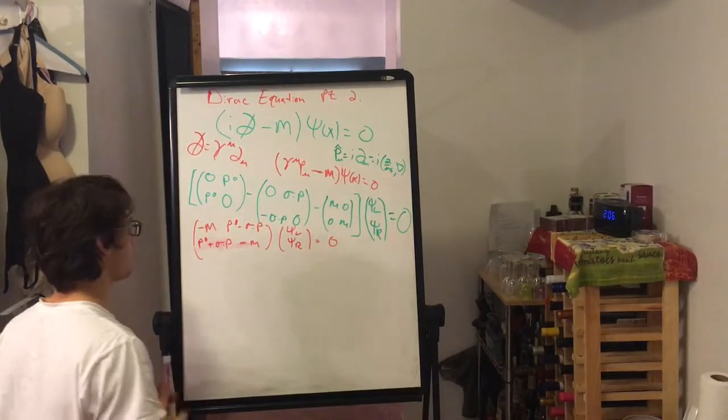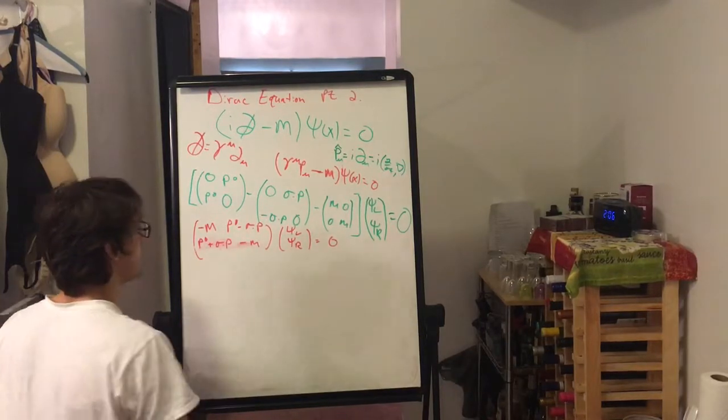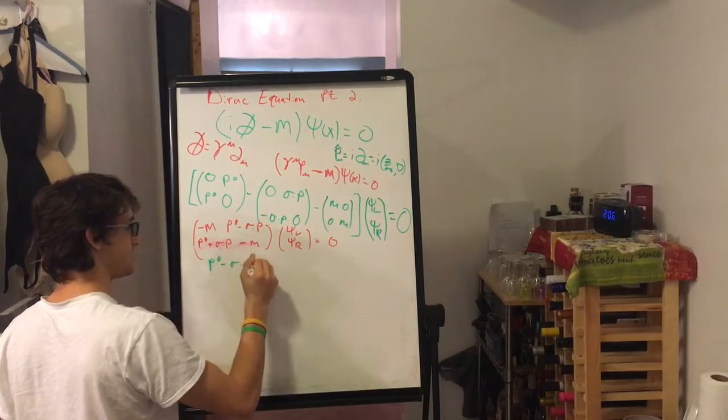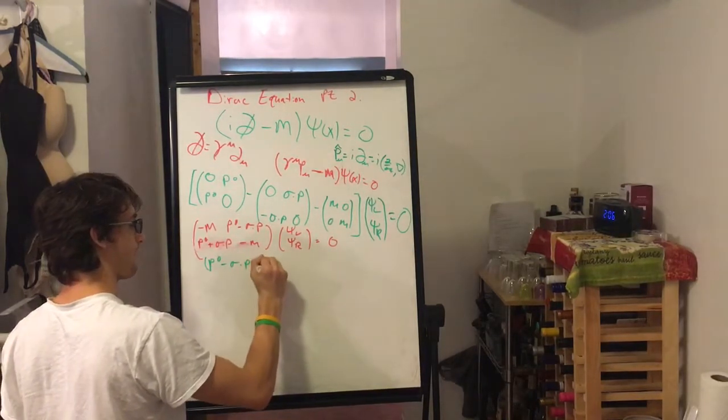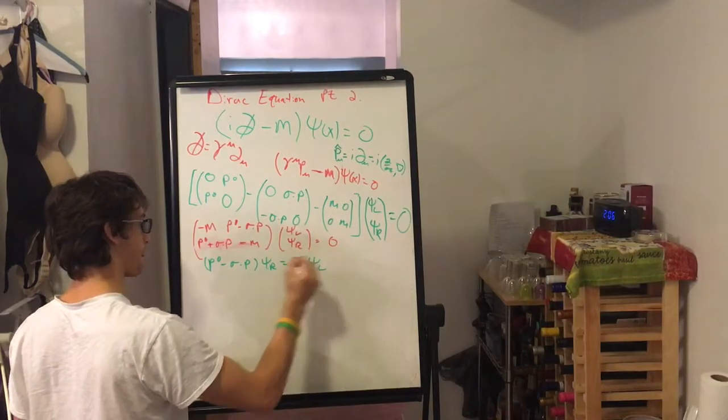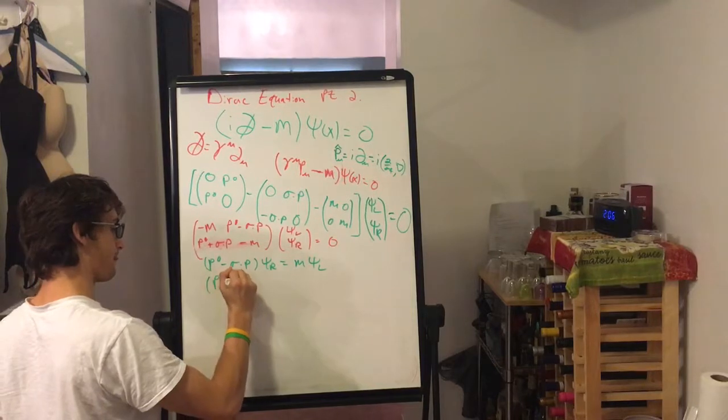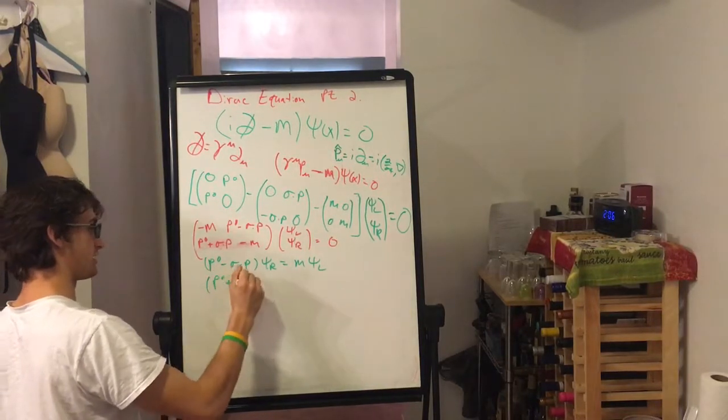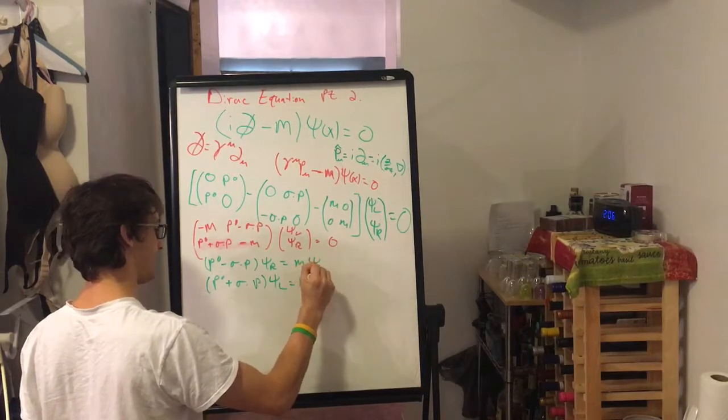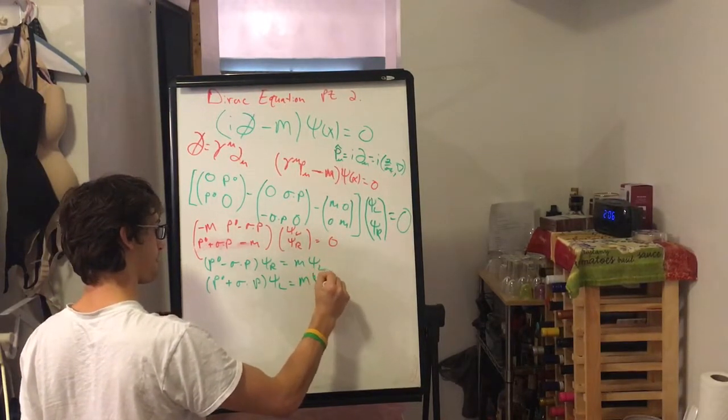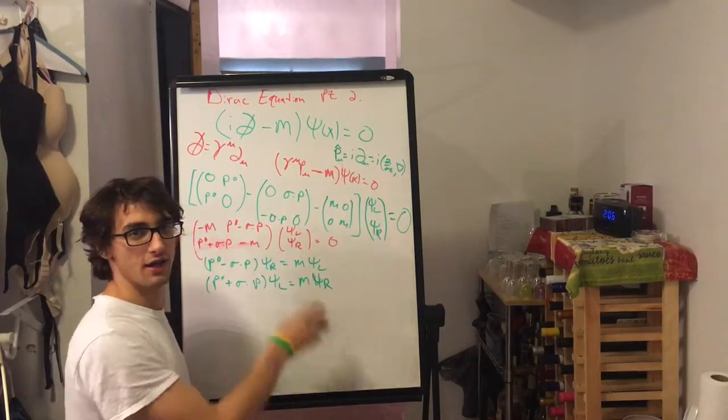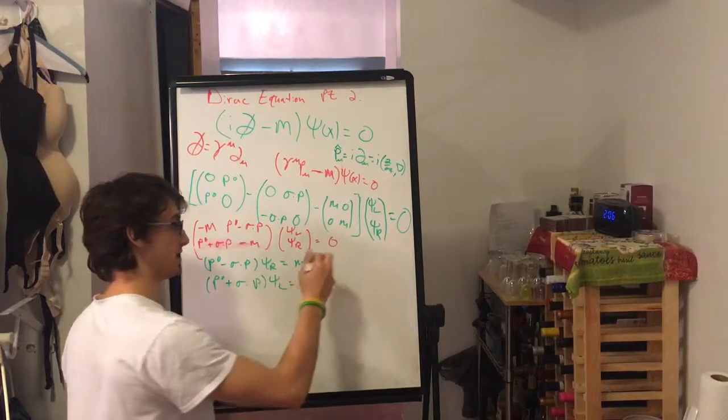We have M, P zero minus sigma P, and sigma P, P zero plus sigma P, and that's minus M. So, now what we end up getting is we get P zero minus sigma P, phi R equals M phi L. And we just change the sign for the left moving one, phi R.